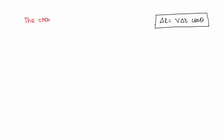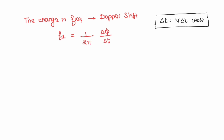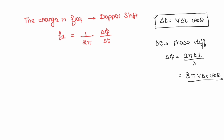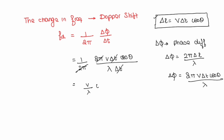Let us see the formula to calculate the Doppler shift. Doppler shift is a change in frequency, denoted as Fd. Fd = (1/2π) · (del φ / del t). Del φ is the phase difference, and del φ = 2π · del L / lambda. Substituting del L = V·t · cos(theta), we get del φ = 2π · V·t · cos(theta) / lambda. Therefore Fd = (1/2π) · (2π · V · cos(theta) / lambda), and the 2π and del t cancel, giving Fd = V · cos(theta) / lambda.